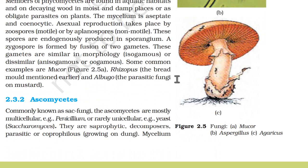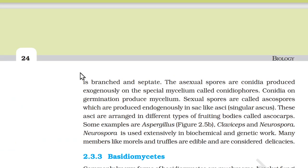2.3.2 Ascomycetes. Commonly known as sac fungi, the ascomycetes are mostly multicellular, such as Penicillium, or rarely unicellular like yeast (Saccharomyces). These are saprophytic, decomposer, parasitic, or coprophilous (growing on dung). Mycelium is branched and septate. Asexual spores are conidia, produced exogenously on special mycelium called conidiophores. Conidia on germination produce mycelium. Sexual spores are called ascospores, produced endogenously in sac-like asci, which are arranged in fruiting bodies called ascocarps. Some examples are Aspergillus, Claviceps, and Neurospora. Neurospora is used extensively in biochemical and genetic work. Many members like morel and truffle are edible and considered delicacies.